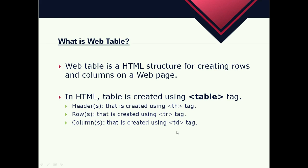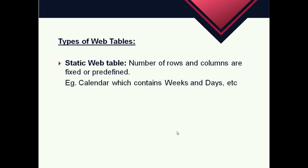Generally on a web page there are two types of web tables. The first one is a static web table, where the number of rows and columns are always constant or predefined. For example, a calendar which contains weeks and days — in a calendar, weeks and days are already predefined.